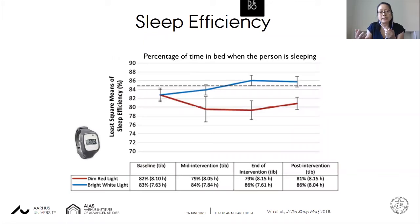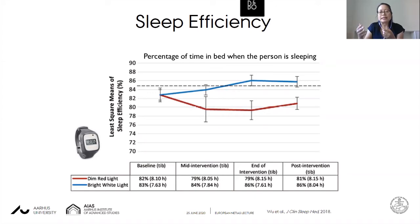When we looked at sleep efficiency — the percentage of time in bed during which a person is actually sleeping — we found similar results. A clinical cutoff of around 85% is considered healthy sleep efficiency; below that is more impaired. All groups had impaired sleep efficiency at baseline, but by the end of the intervention only the bright white light group had, on average, reached healthier sleep efficiency, and this was sustained to three weeks after the intervention.